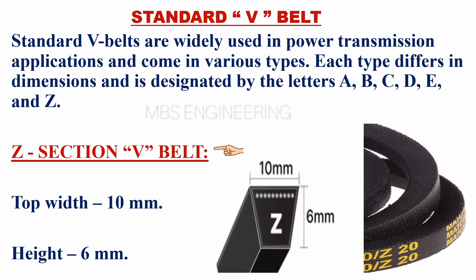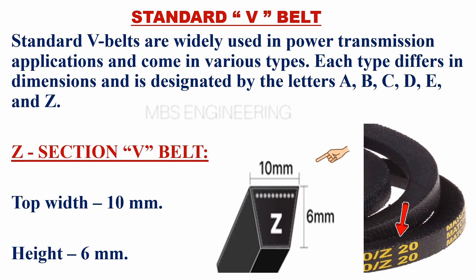We will understand the Z-section V-belt. The top width of the Z-section V-belt is 10 millimeters. The height of the Z-section V-belt is 6 millimeters. Please refer to the figure that illustrates section Z V-belt.